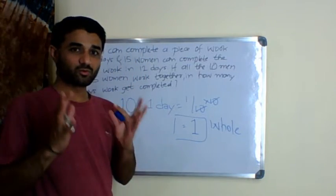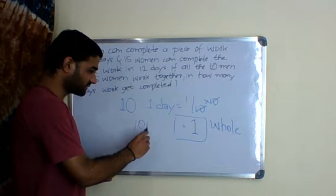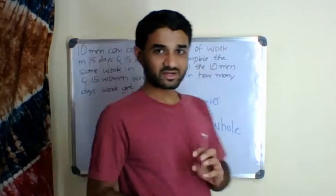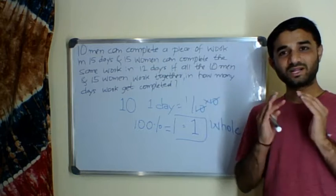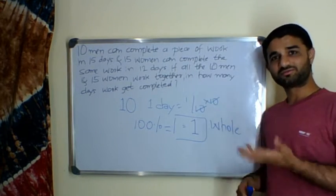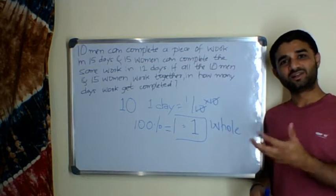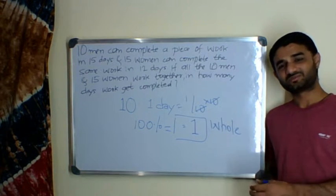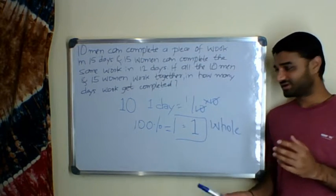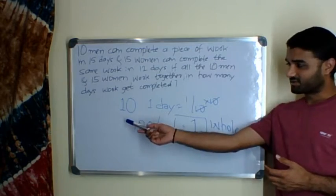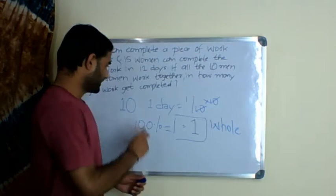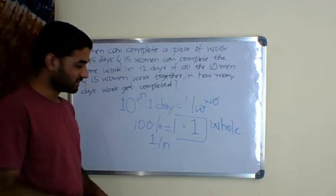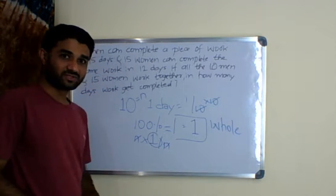In mathematics you have some unitary method and all, those things we will touch later. You will get one. One means the whole work is denoted as one, which is as good as saying 100%. Both mean the same - it means complete work. The work could be anything: plowing a field, harvesting a field, in case of pipes and cisterns it could be filling a tank, emptying a tank, or it could be children, man, or woman, or soldiers performing something. One is the entire work, which is 100%. If some work is completed in n days, then in one day 1 by n work will be done. If it is 10, 1 by 10. So that again when you multiply it by n, you get one which is complete whole work.